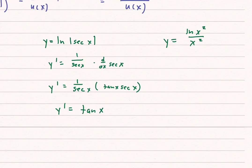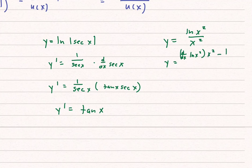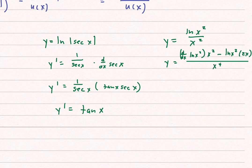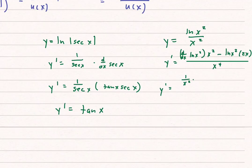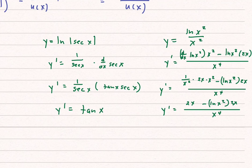For the fourth example, we need the quotient rule. This equals the derivative of natural log of x squared times x squared, minus natural log of x squared times the derivative of x squared — which is 2x — all divided by x to the fourth. The derivative of natural log of x squared is 1 over x squared times 2x. On the gateway exam, you only need to reach the step with no complex fractions and no negative exponents.